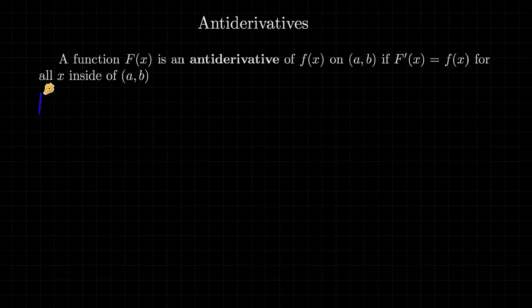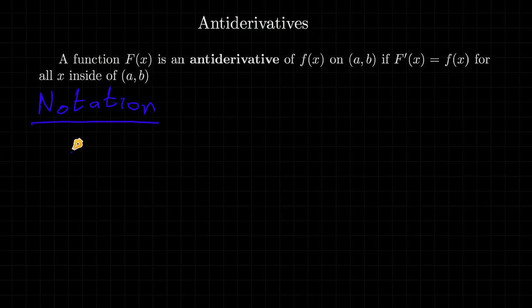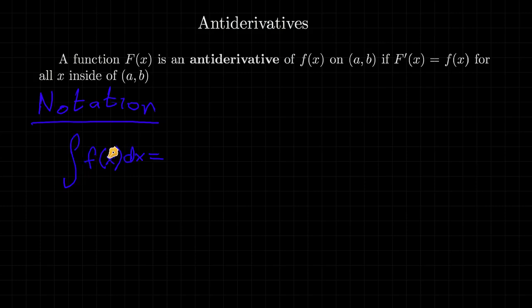Now let's look at some notation we're going to use a lot later on. When you write the integral of f(x) dx — we'll explain exactly where this comes from — for now, this symbol, called the integral sign, is asking you to find the antiderivative of little f, which is capital F(x) + C.